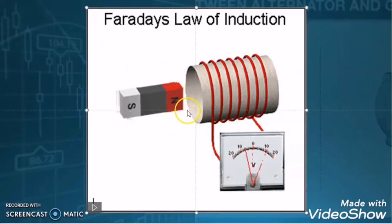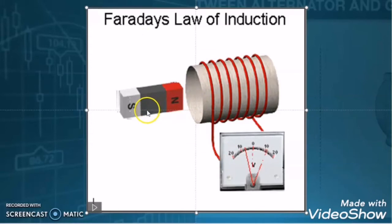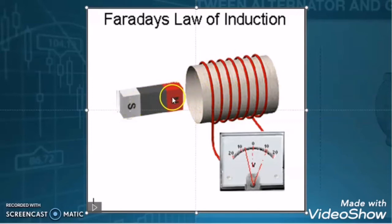Based on this experiment, Faraday gave two laws, and those laws are called Faraday's law of electromagnetic induction. So what we learned so far is that when there is a relative motion between the magnet and the coil, there is an induced EMF or induced current in the coil. It means we can generate electricity by giving relative motion between the magnet and the coil.